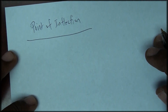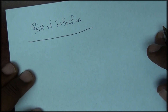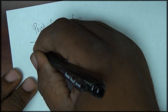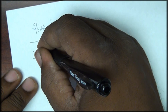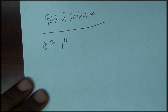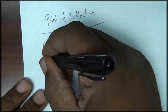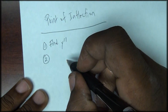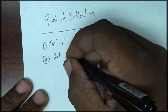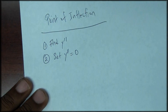The steps involved in finding the point of inflection are: first, find the second derivative; then set the second derivative equal to zero.